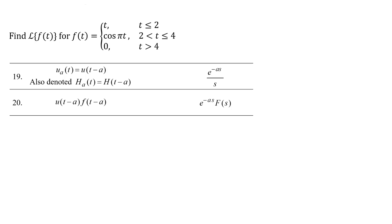Both of those lines use the unit step function. Remember that that function is 0 when t is less than a, and 1 when t is greater than or equal to a. We're going to use that unit step function as an on/off switch, so that with zeros and ones I have terms turned on or off.